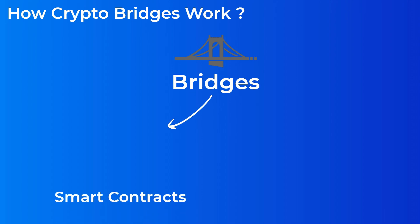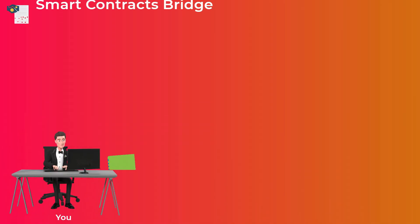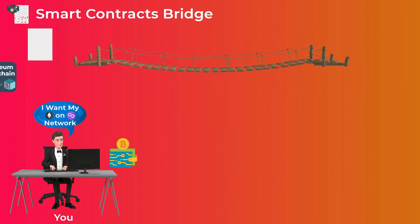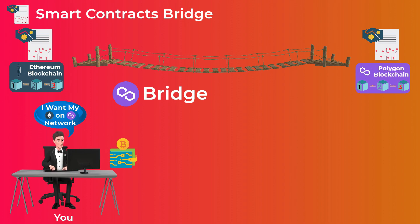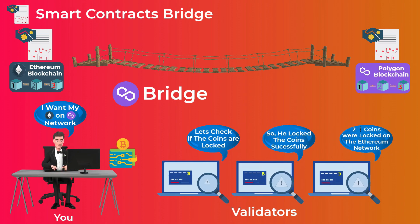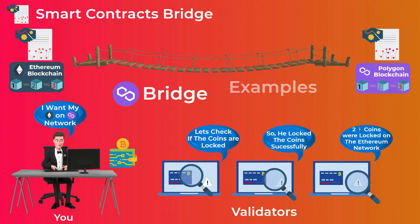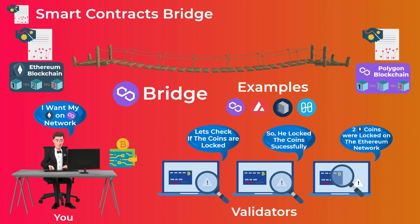There are two types of bridges. The first type is bridges that work using smart contracts, and the second type is bridges that work using liquidity pools. Let's begin with bridges that rely on smart contracts. Say you want to get your Ethereum on the Polygon network, so you use the Polygon Bridge. This type of bridge has two smart contracts — one on each blockchain. After you click transfer, your Ethereum coins will be locked in the smart contract on the Ethereum blockchain. Validators verify the coins are locked and send a message to the smart contract on the Polygon network, which then automatically mints new wrapped Ether tokens for you and sends them to your wallet. Examples include the Polygon Bridge, Avalanche Bridge, Ren Protocol, and the Harmony One Bridge.